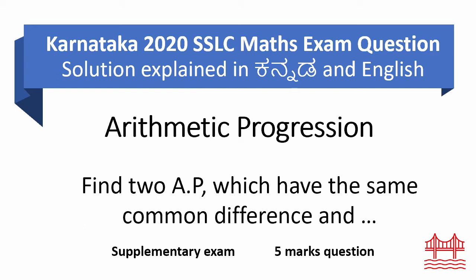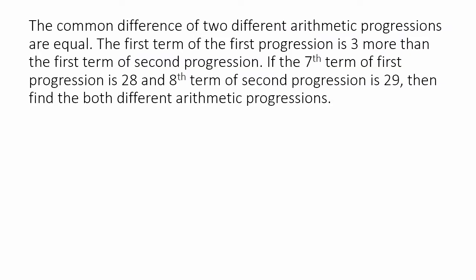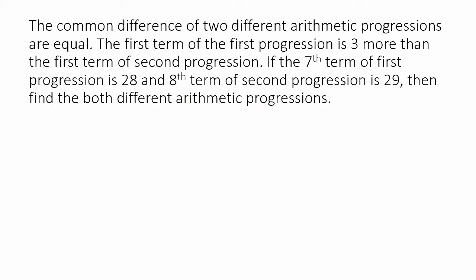Arithmetic progression — a 5-mark question. Let's look at a 5-mark arithmetic progression question. We have been asked to find two different arithmetic progressions. What kind? They have the same common difference — the common difference is equal.